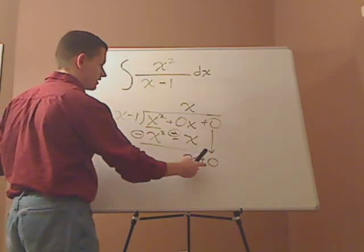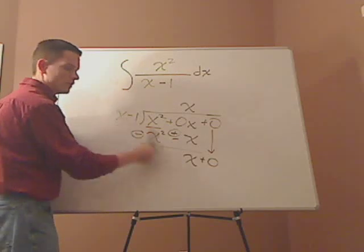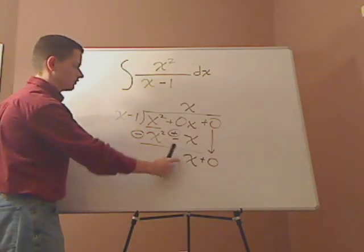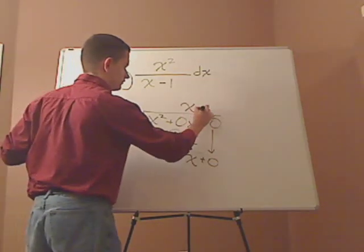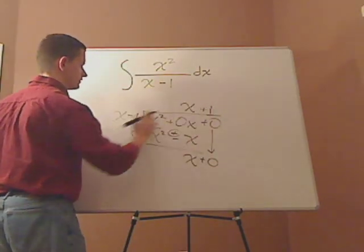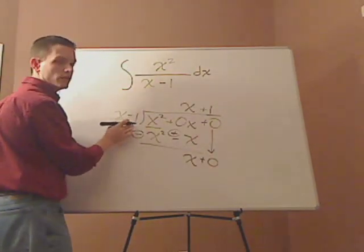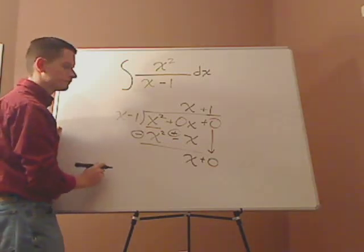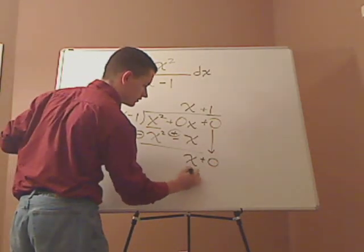What times x minus 1 will give me the x? Right, positive 1. So you take that positive 1, it will be 1 times this. What's 1 times x minus 1? It's just x minus 1.